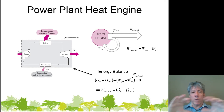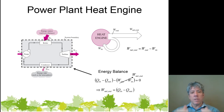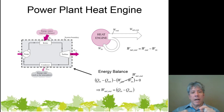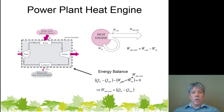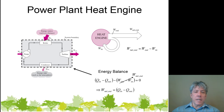We can draw an energy balance for the system with the boundary around the whole plant. We have heat flowing in and out, and work flowing in and out. Since the system operates on a cycle, the amount of energy in the system is not changing over time. So we can write: Q_in minus Q_out minus (W_out minus W_in) = 0, which gives us that the net work produced equals Q_in minus Q_out. In other words, if energy comes in as heat and doesn't come out as heat, it must leave as net work.